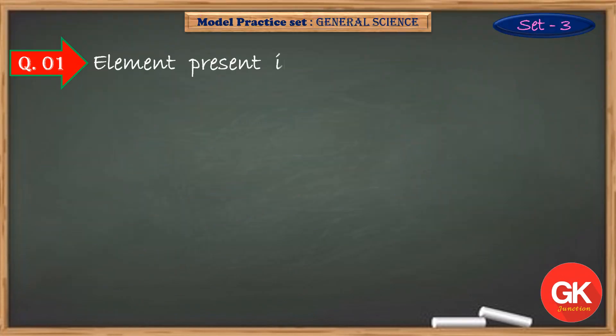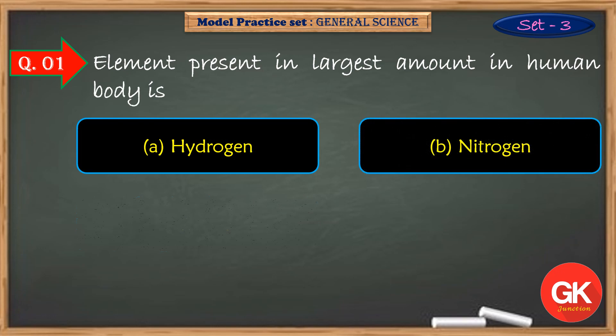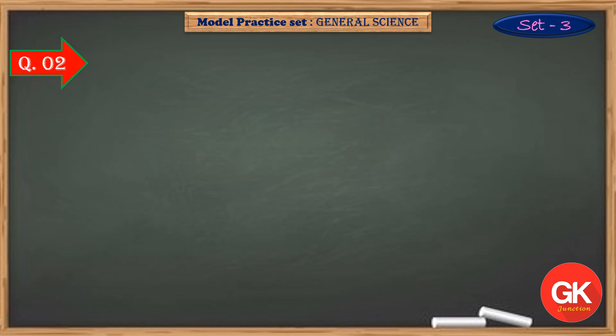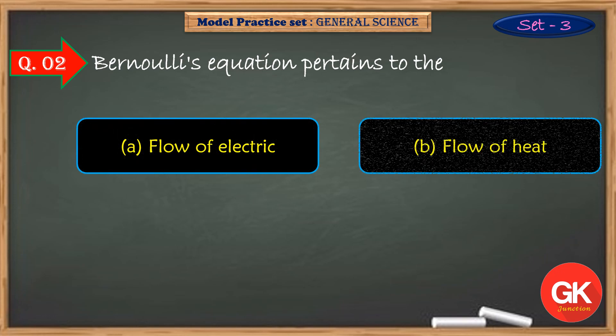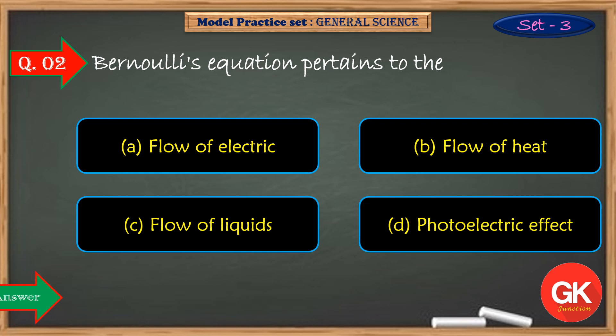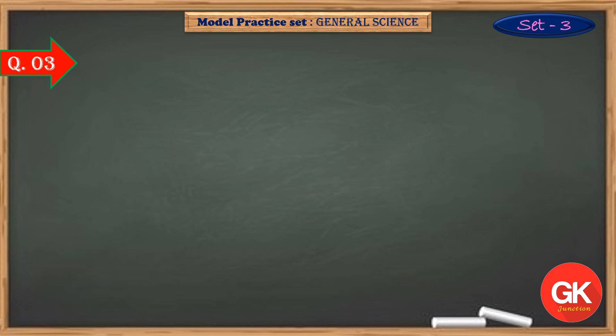Element present in largest amount in human body is. Bernoulli's equation pertains to the. Aspirin is the common name of.